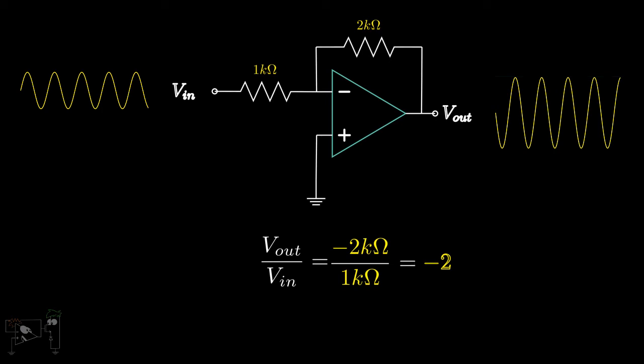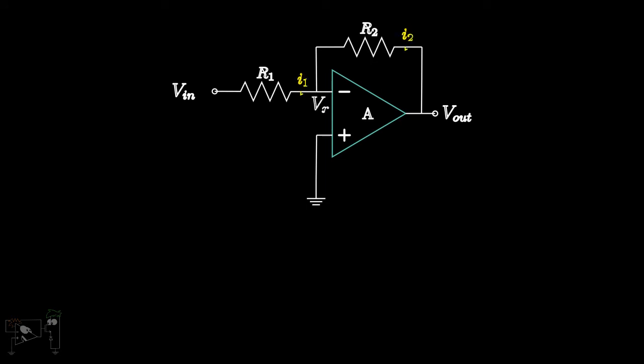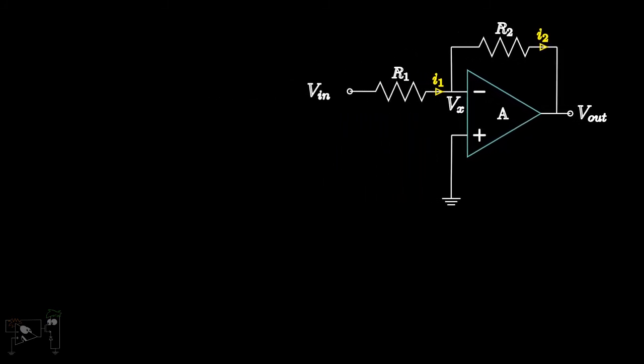You might be thinking, what will happen in the case of a practical op-amp? In the end, that's what we'll use in real life. Let's take a practical op-amp with an open-loop gain A in the exact same configuration as before. We note that the currents flowing through R1 and R2 are given by Vin minus Vx upon R1, and Vx minus Vout by R2, respectively.